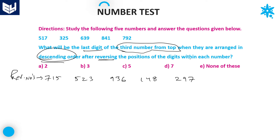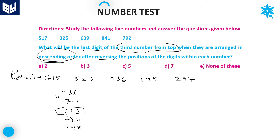Now arrange the reversed numbers in descending order — that is, from largest to smallest: 936, 715, 523, 297, 148. The third number from the top is 523. The last digit of 523 is 3. Option B is the right answer.